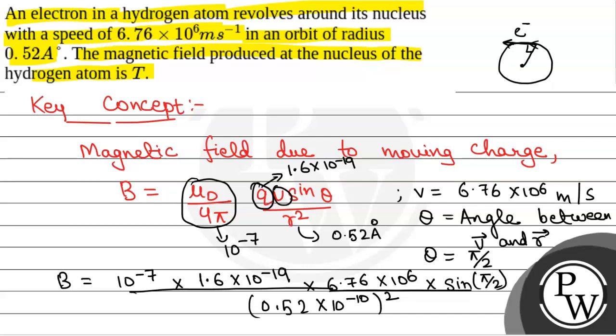On solving, we will get the value of B as 40 tesla. The magnetic field produced at the nucleus of hydrogen atom is 40 tesla. This will be the final answer.